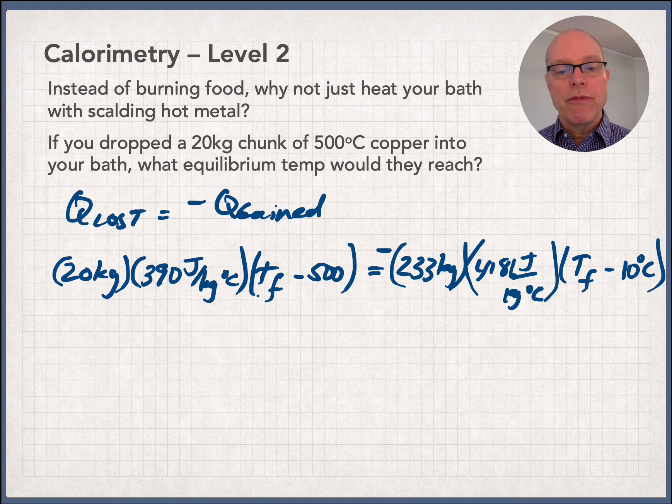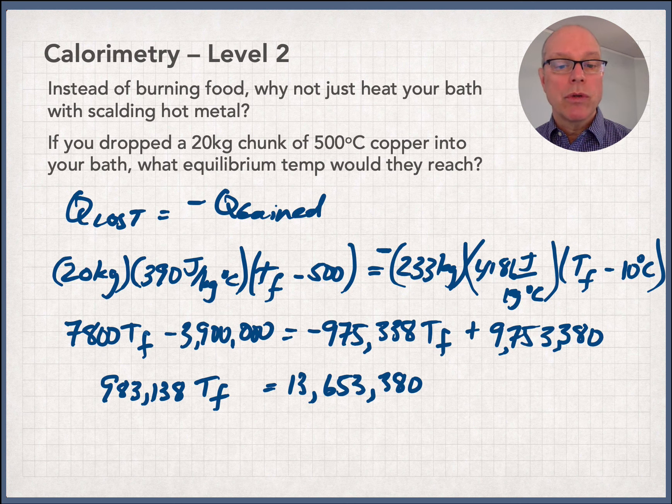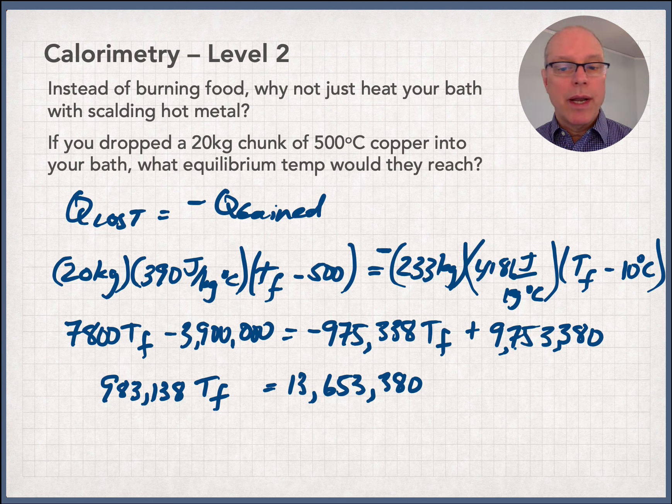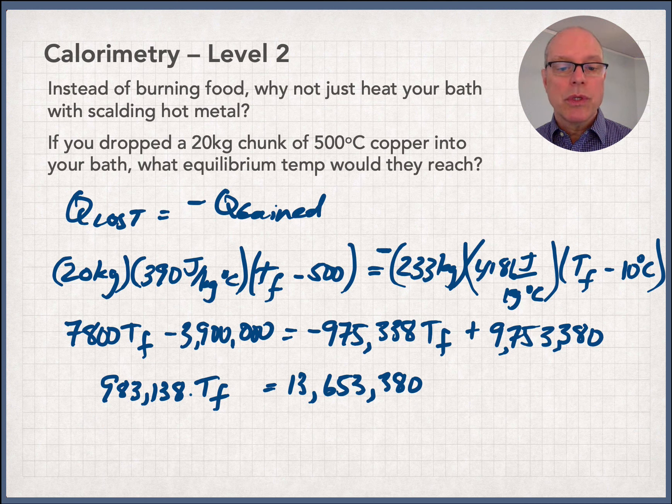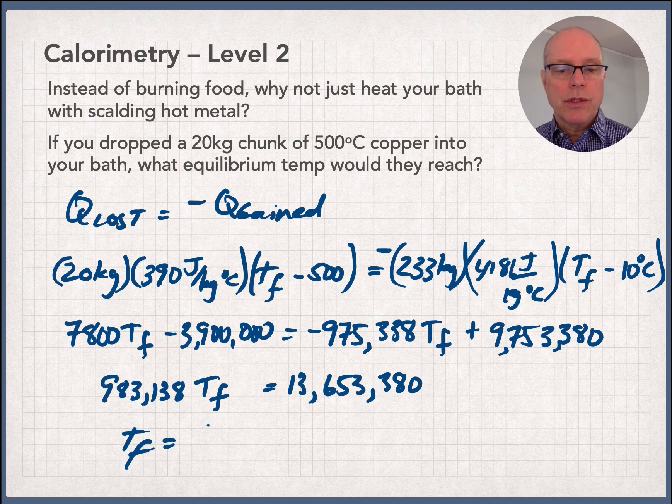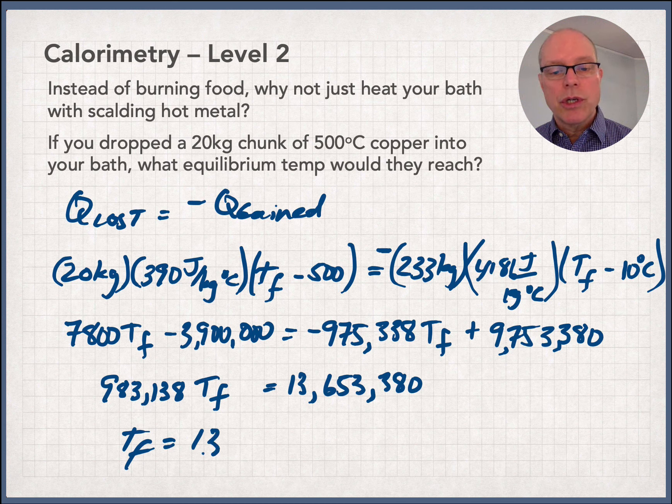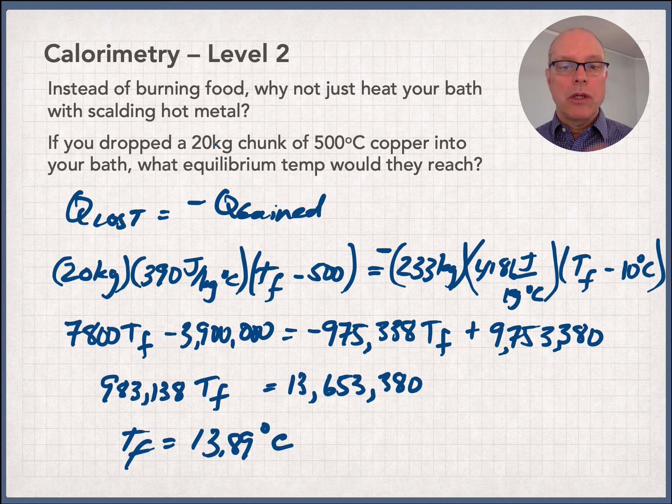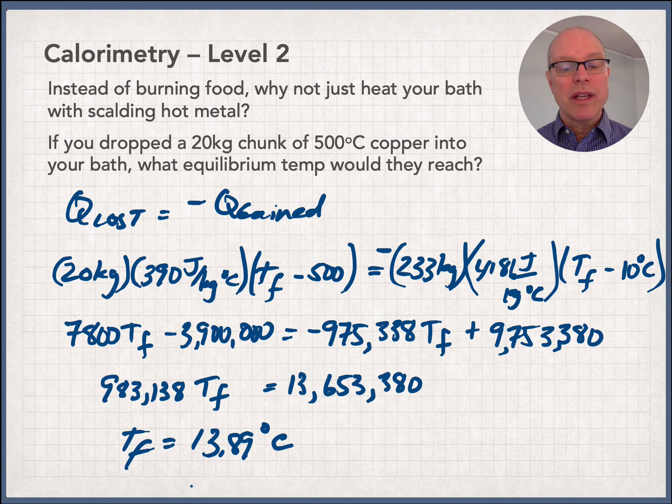So when that happens, I'm going to simplify all this, I'm going to do it off camera and just write that down. So I've done my work. I've distributed 20 times 390 into TF and 500. I've done the same thing on the right hand side. And please feel free to check me if you want to. But what you're going to do is collect up all like terms, put them where they belong, and then just go ahead and divide both sides by the prefix of TF. And what I get is TF equals 13.89 degrees C. So here's the thing. Amazingly, 20 kilograms, which is about 50 pounds of 500 degree copper, does just about as poorly at heating up your bathtub as burning the Five Guys burger does. That's pretty poor, huh?